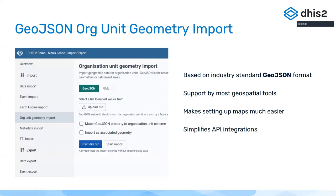We also built a new importer for geometry data based on GeoJSON. This is a new importer that we hope will phase out the previous GML-based importer. GML is a much more heavyweight format based on XML, and as some of you have probably tried before, setting up the GML-based importer for geometry in DHIS2 is not a faint of heart — it's quite complicated.